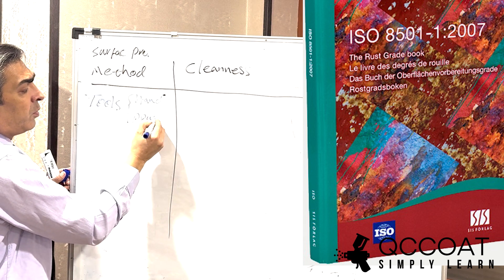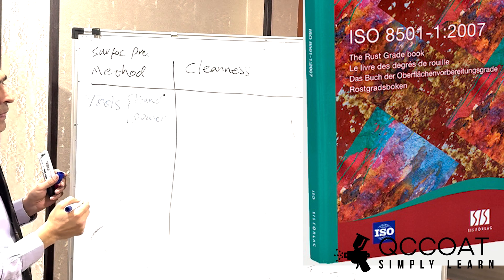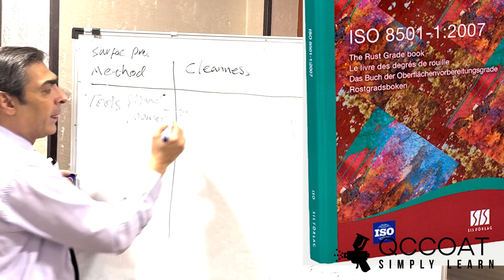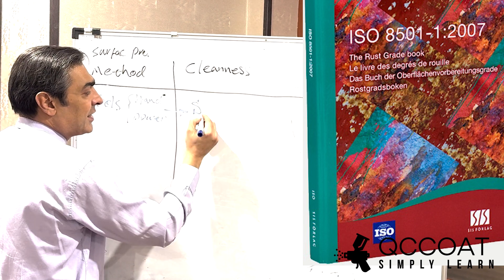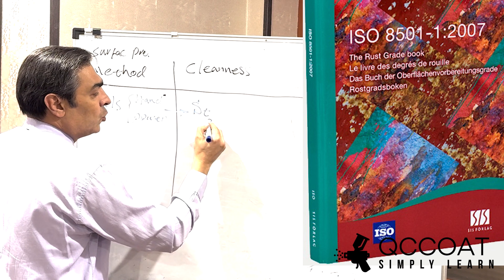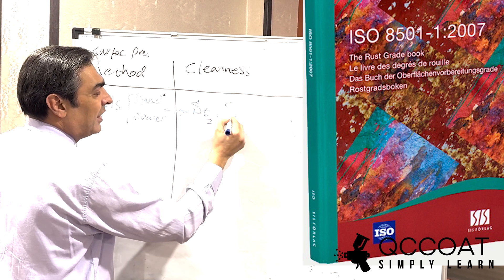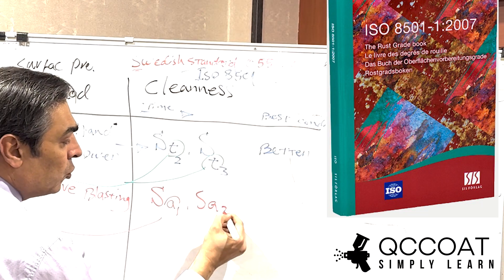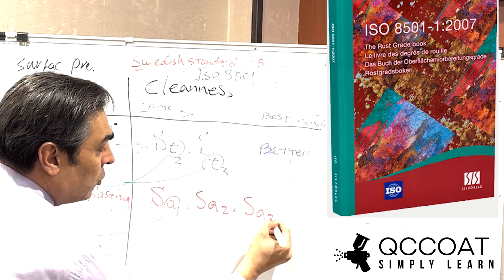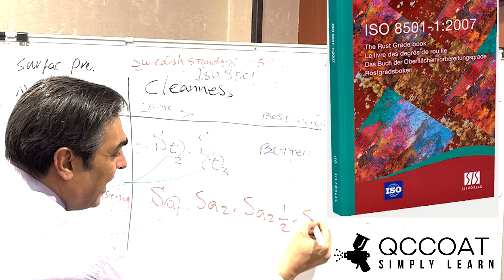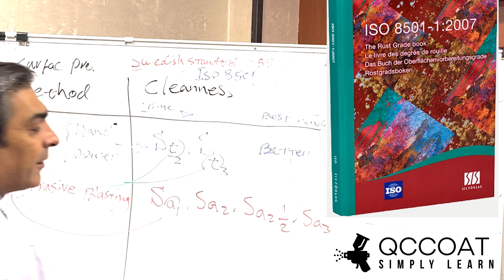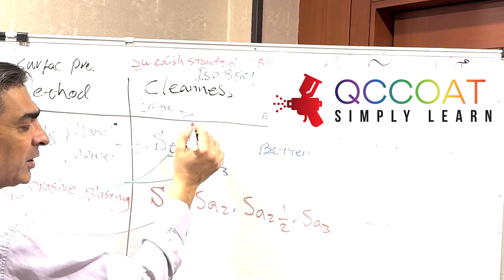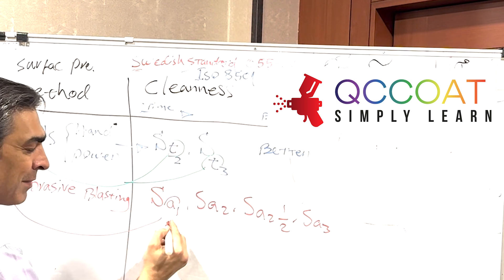In the ISO standard series, if cleaning is done with a hand or power tool, the clean surface is given a grade of ST, which changes with the duration of tool use. The higher the number, the longer the tools are used and the cleaner the surface — ST3 is better than ST2. If the cleaning method is abrasive blasting, the clean surface is given a grade of SA. The bigger the number, the longer the abrasive blasting, and the cleaner the result — SA3 is the best and SA1 is the worst.